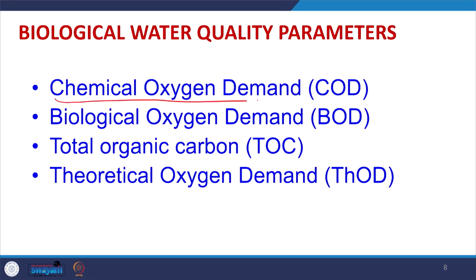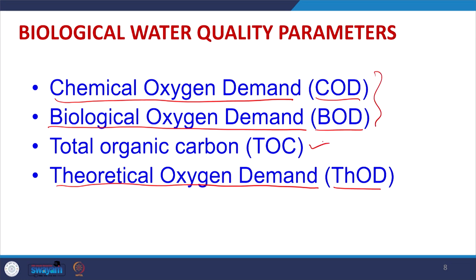There are three different ways to measure oxygen demand. One is chemical oxygen demand (COD), another is biological oxygen demand (BOD), and there is also theoretical oxygen demand (THOD), which is theoretical in nature and requires no laboratory testing. We can also determine total organic carbon (TOC) — if the total organic carbon is known, we can estimate the oxygen demand from it.